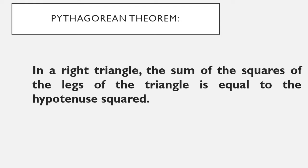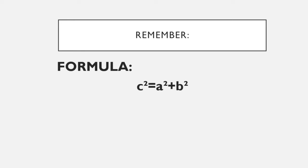In a right triangle, the sum of the squares of the legs of the triangle is equal to the hypotenuse squared. The sum of the squares of the legs, which is the perpendicular on the base, is equal to the hypotenuse. Remember that the hypotenuse is the longest side of the triangle and the opposite of the right angle.